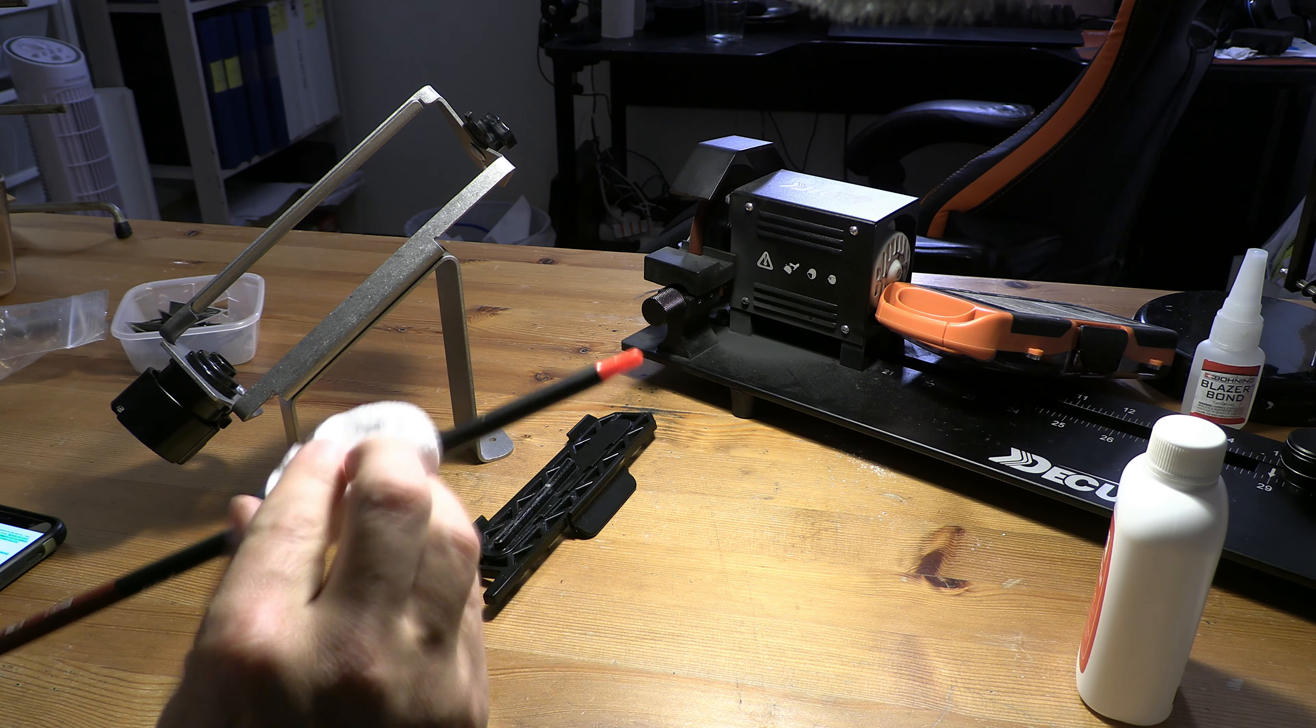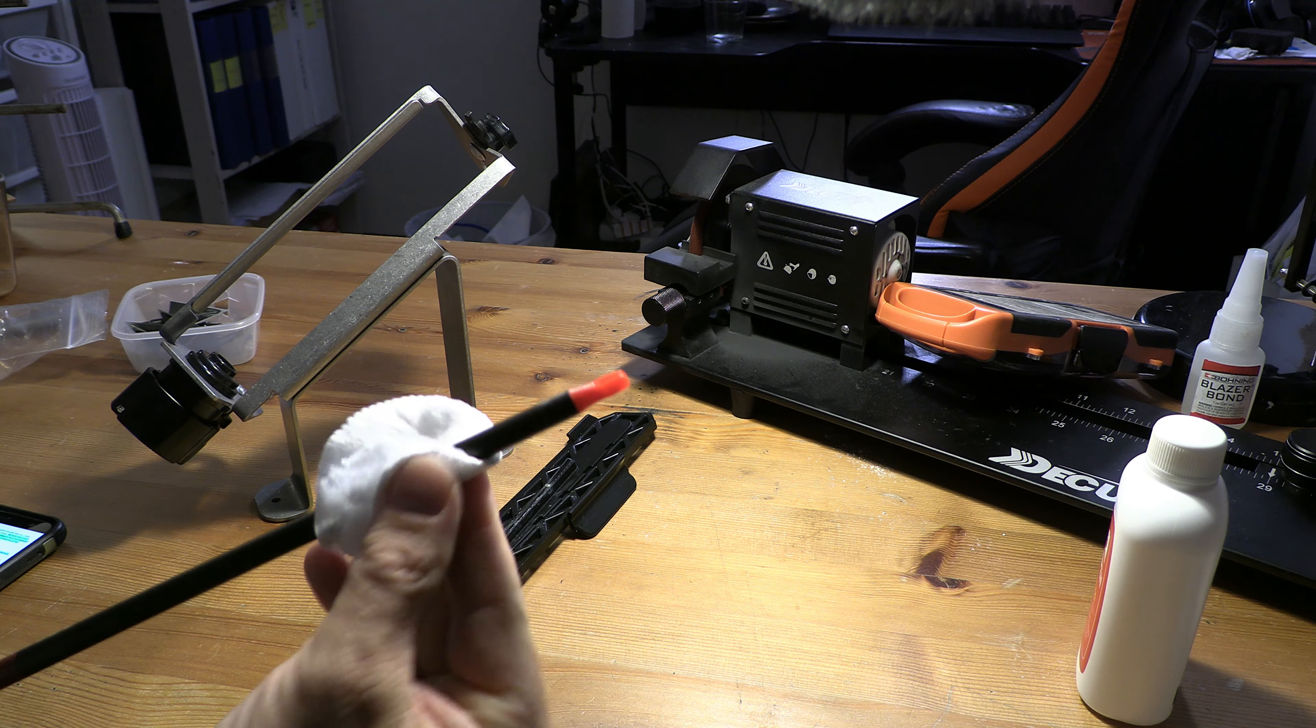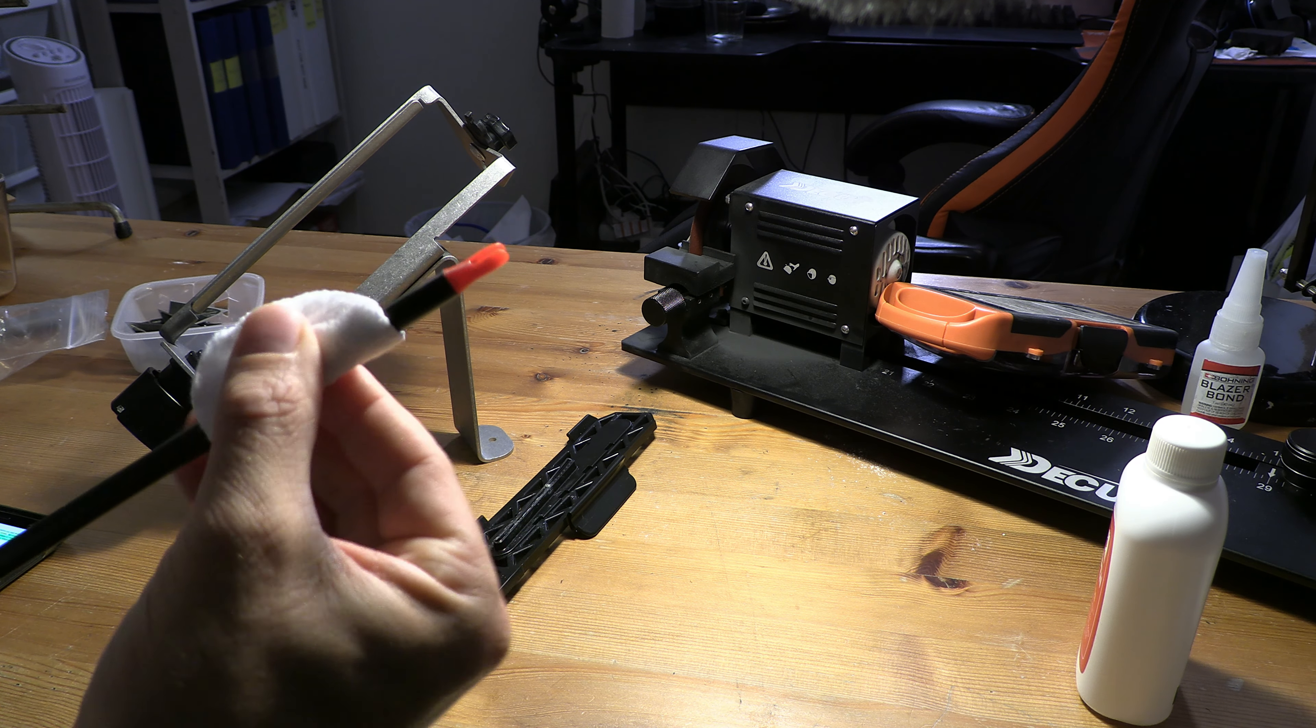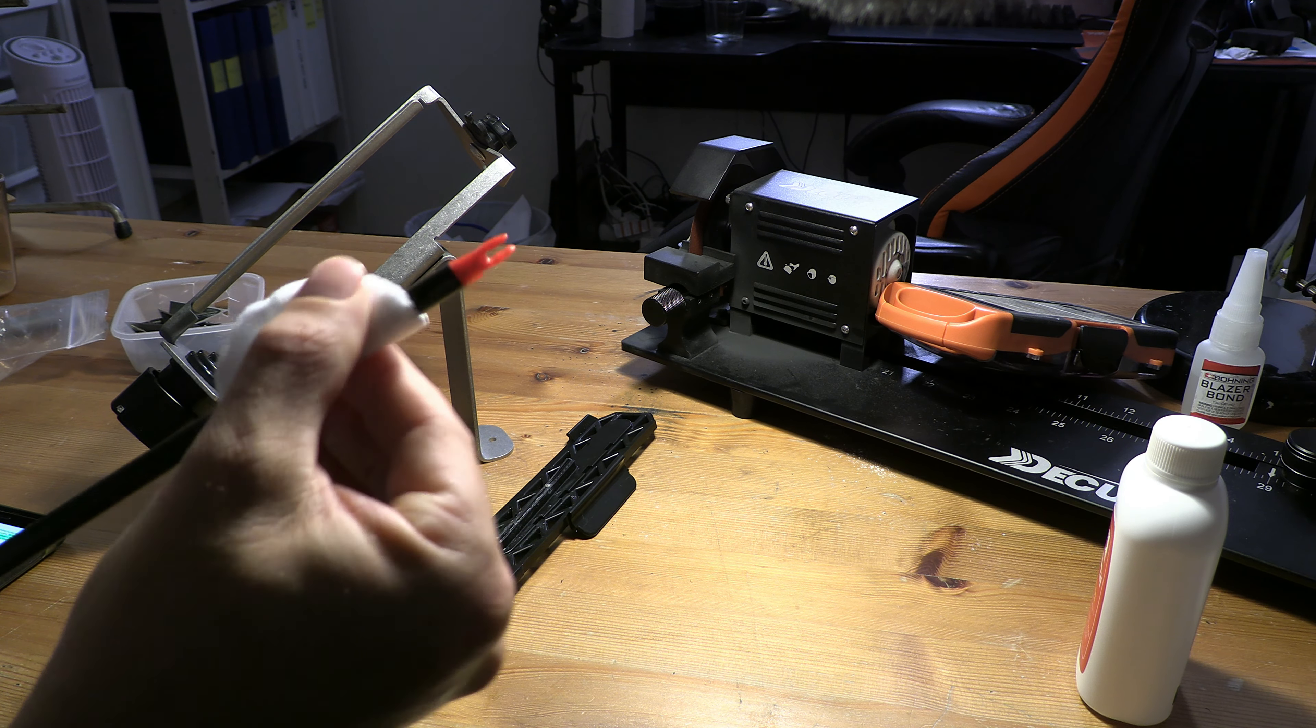So first off, we're gonna get the shafts ready. It's as simple as getting a pad and some acetone and rubbing them down. Once you've finished wiping them down, make sure you place it in a way where you can grab the tip end easily. We no longer want to be grabbing the nock end with our hands. Once you have the shafts all rubbed down, you're ready to go.